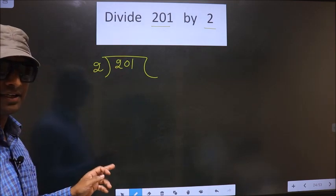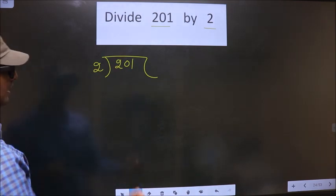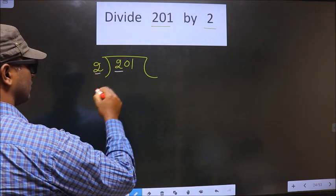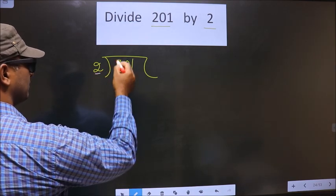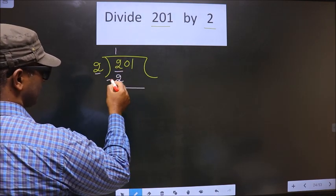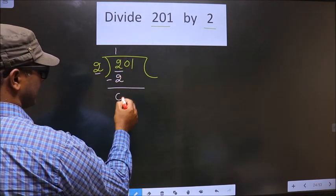Okay, next. Now, here we have 2 and here also 2. When do we get 2 in 2 table? 2 once, 2. Now, you subtract 2 minus 2, you get 0.